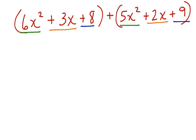When we add 8 and 9, we have plus 17. 2x plus 3x is 5x. And 5x squared plus 6x squared is 11x squared.